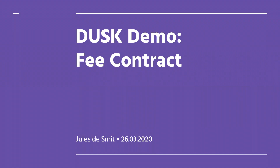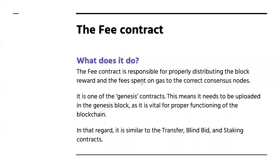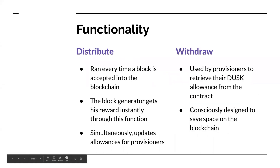Welcome everyone. Today I'm going to be showing off the fee contract. The fee contract is called basically after the block is accepted, as the very last transaction in the block. It takes care of distributing both the block reward and the fees spent on gas to the block generator and the provisioners. As mentioned in the last demo, gas is a unit of computation that you pay for executing a smart contract. The fee contract is one of the Genesis contracts, meaning it needs to be uploaded to the blockchain on the very first block, and it's vital for the proper functionality of our blockchain, just like the transfer contract, the blind bid contract, and the staking contract.